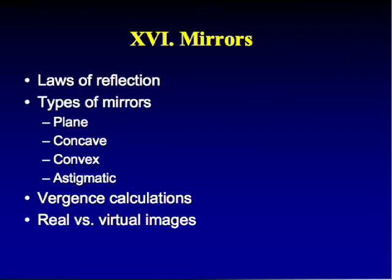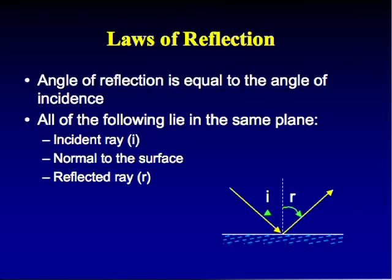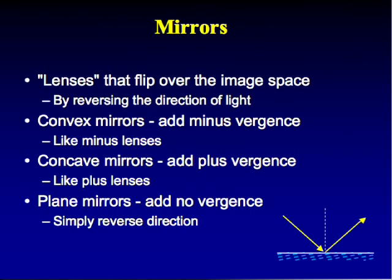Now moving to mirrors. The laws of reflection: the angle of reflection equals the angle of incidence, and the incident ray, the normal to the surface, and the reflected ray all lie in the same plane. A mirror can be thought of as a lens that reverses the direction of light. A plane mirror adds no vergence; a convex mirror adds minus vergence; a concave mirror adds plus vergence like a plus lens.